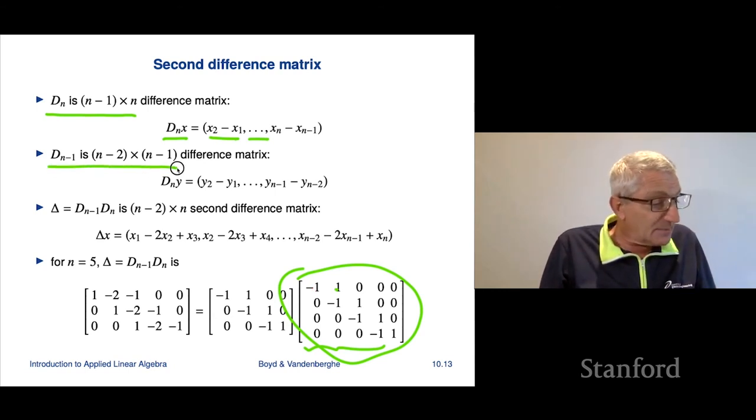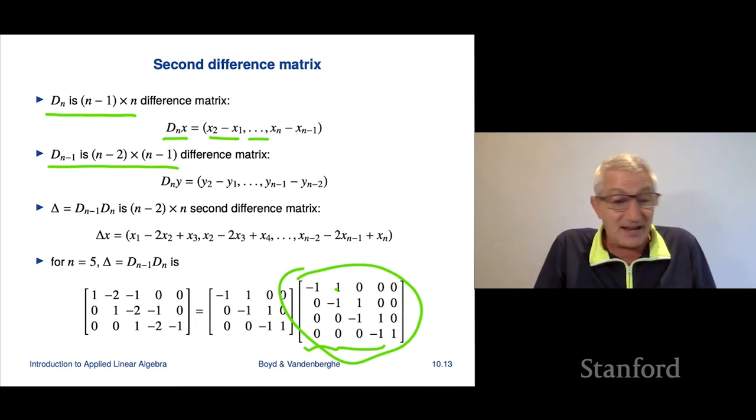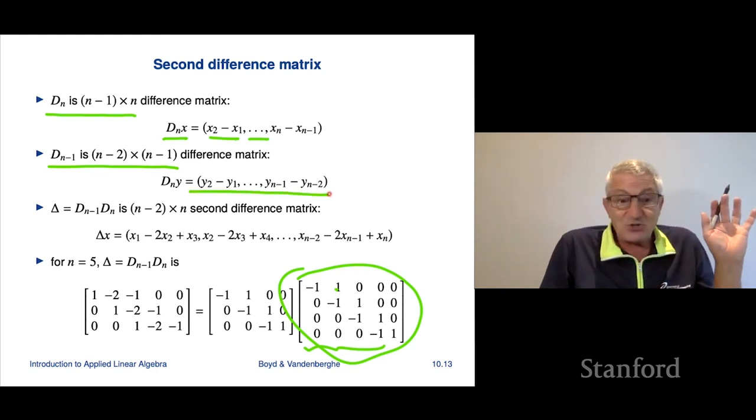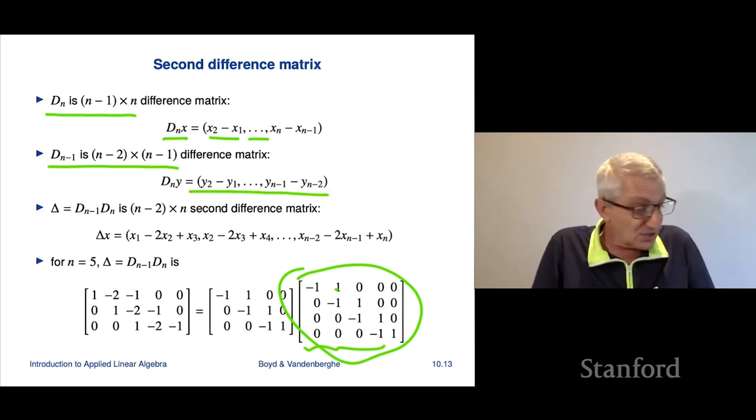Well, we also have D sub n minus 1, and that is the difference matrix, but it's a different size. It's n minus 2 by n minus 1. And what it does is it takes, it simply takes the, it's also the differences, but it's one dimension smaller.